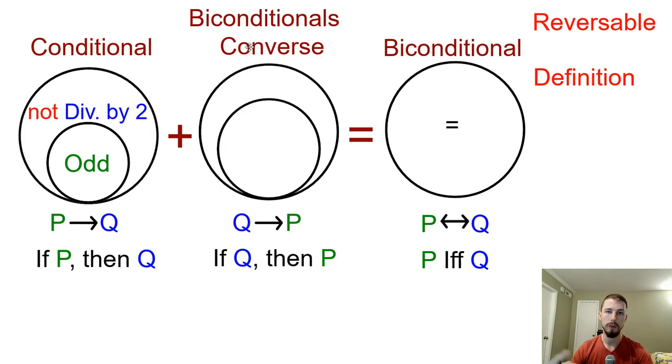Then we can look at the converse of the statement. So if we switch the order of those, is it still true? So now Q implies P. In other words, if it's not divisible by 2, does it mean that it has to be an odd number? Yes. So not divisible by 2 and odd. Now if both of these statements are true, if it's reversible, meaning if odd numbers are not divisible by 2 and things that are not divisible by 2 are odd.